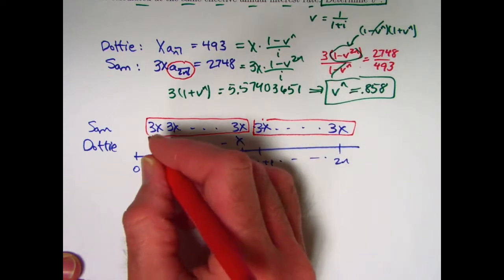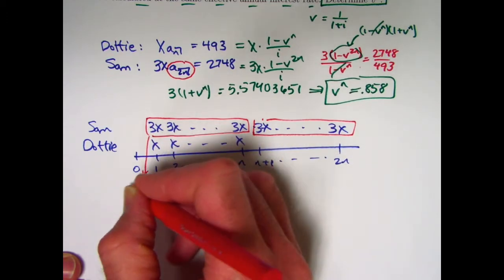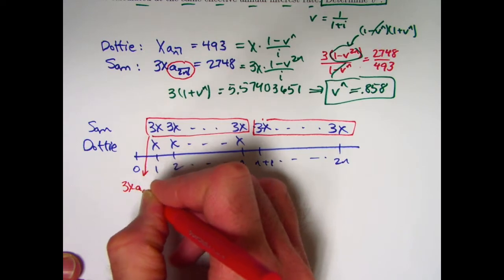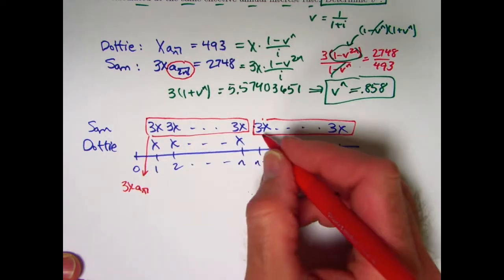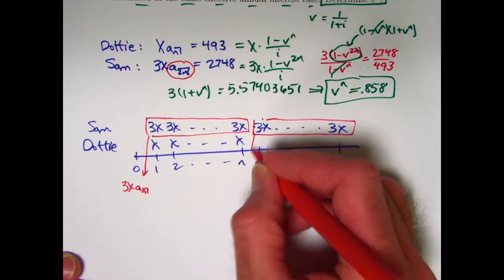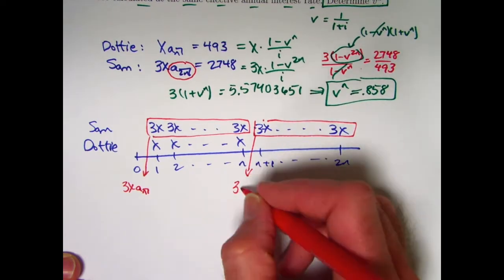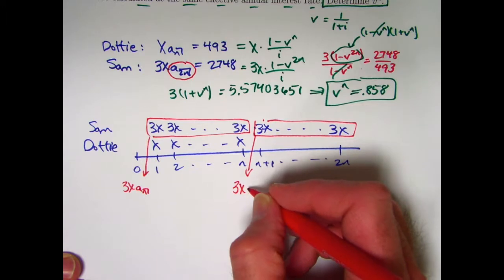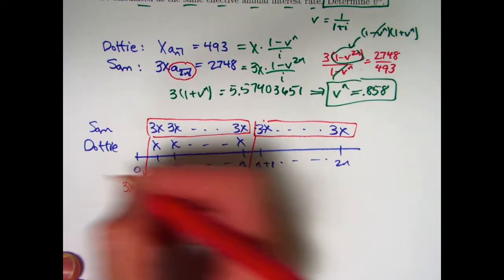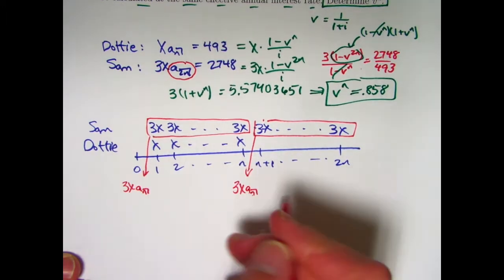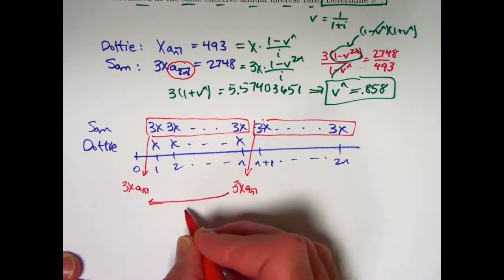The present value at time 0 of the first n payments would be 3x a n. The present value of the second group of n payments at time n is going to be the same thing. Notice that that's not time 0. Time n is going to be 3x a n, but then I want to bring that back to time 0, pull it back, discount it by multiplying it by the present value discount factor, v to the n. Multiply times v to the n.